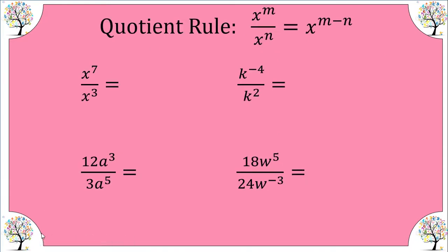Now let's look at the quotient rule. The quotient rule is going to be the inverse of the product rule because multiplication and division are inverses. This time we're going to subtract the top exponent minus the bottom exponent for expressions that have the same bases. Let's look to see why.